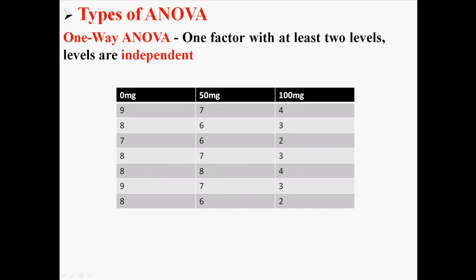Now there are a few different types of ANOVA, and I'm going to show you about three right here. I'm going to show you first the one-way ANOVA. This is an ANOVA that has one factor with at least two levels, and the levels are independent.